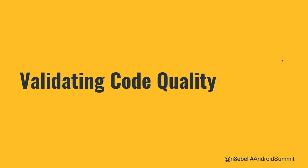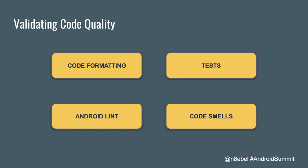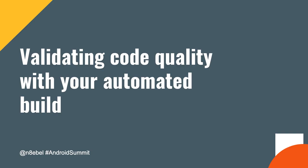Now let's talk about how we can validate code quality to improve the development process. When we talk about validating code quality, this could be things like checking the code formatting, running our tests, running the Android linter, or checking for code smells using a tool like Detekt. There are a lot of different tools, but they all fall under a similar pattern — they're all trying to make sure that our code is consistent and isn't doing anything that it shouldn't be.